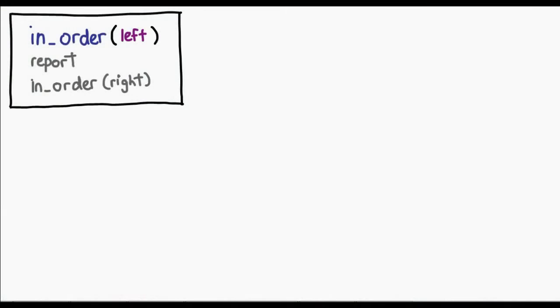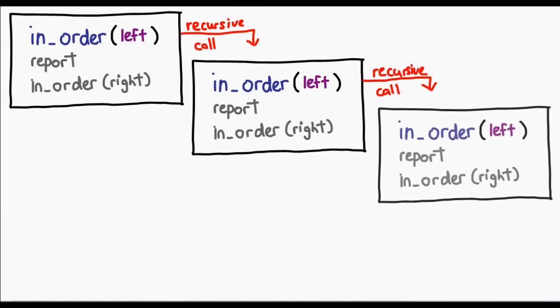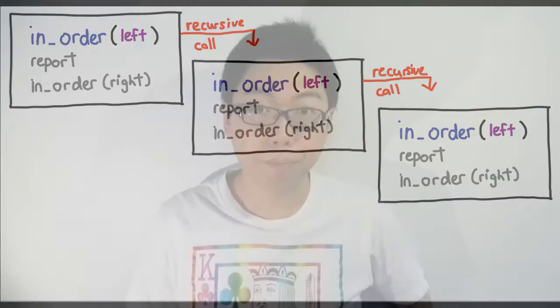Now if you're confused at this point it's understandable — the code isn't immediately easy to understand, which is why instead we're going to talk about it in terms of just tracing the tree manually. Essentially we can pull out the concept of what we want to do just by looking at the recursive algorithm. When you first call the in-order traversal algorithm, it will just try to go to the left and as long as the left node exists, it will keep going without reporting anything.